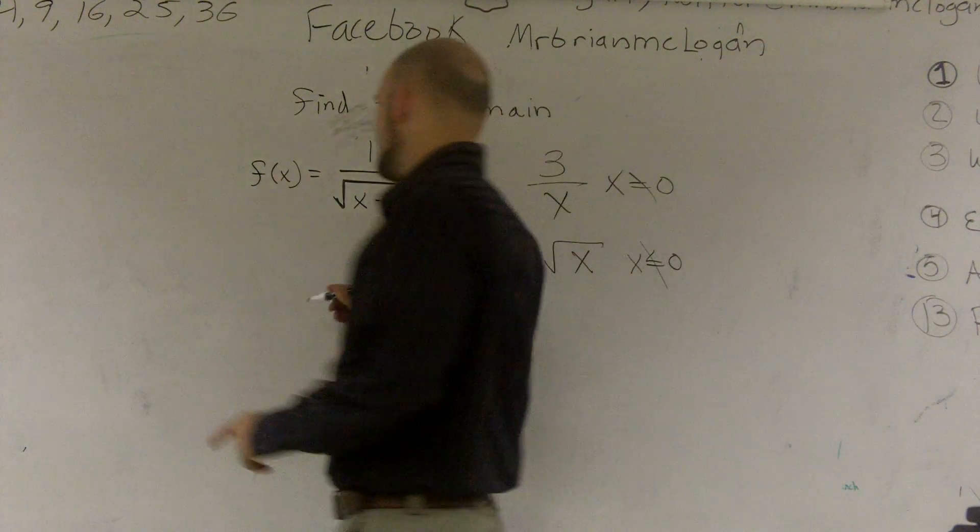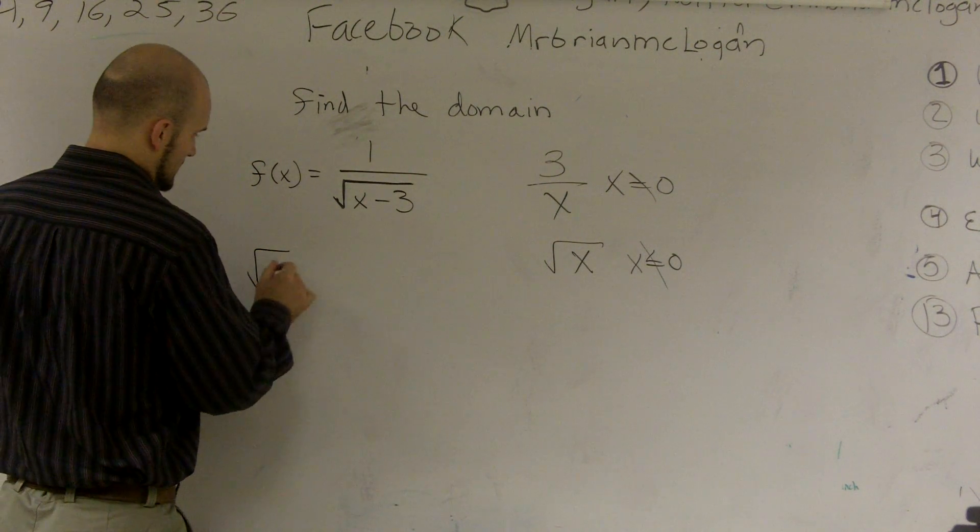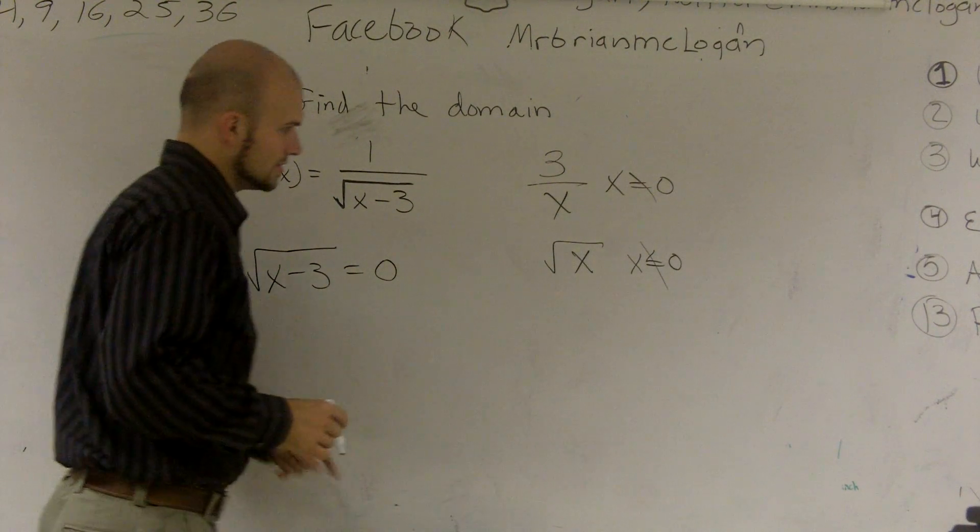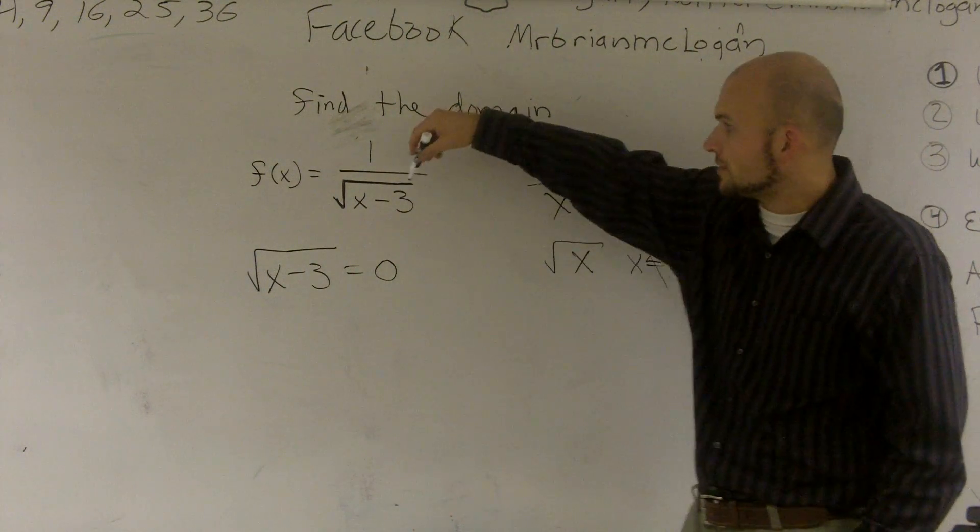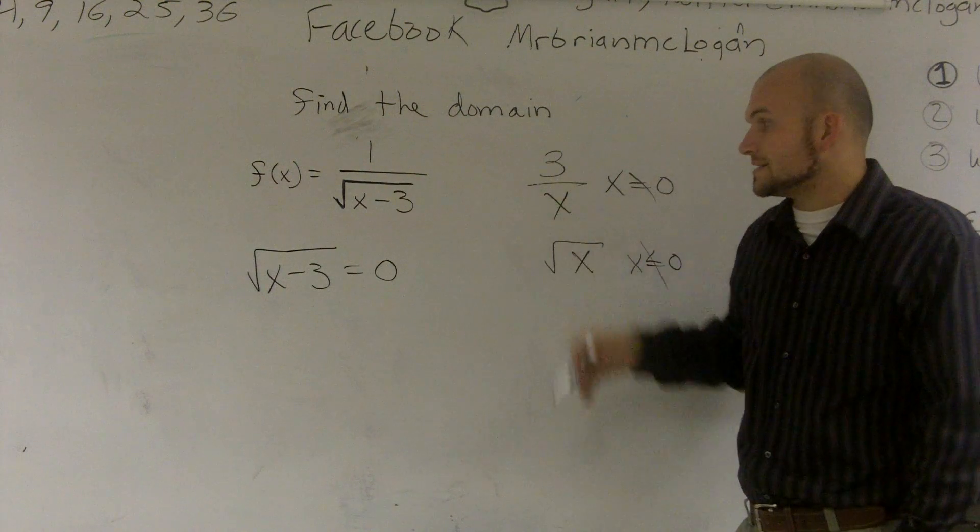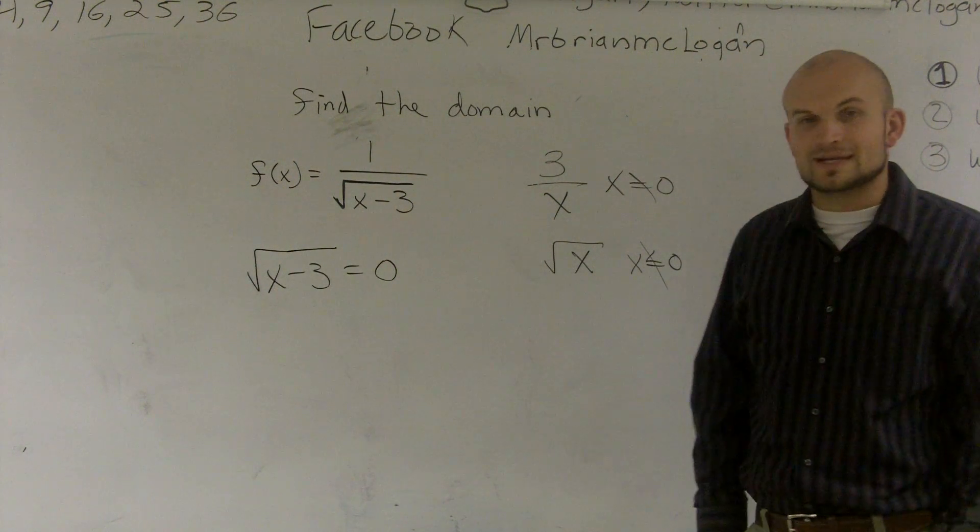What I mean by that is let's figure out what values are going to equal 0. Because if I know a value is going to equal 0, it cannot be a part of my domain, because the bottom of my fraction will be 0 and that will be undefined. So what we're going to do is say the square root of x minus 3, which is my denominator, equals 0.